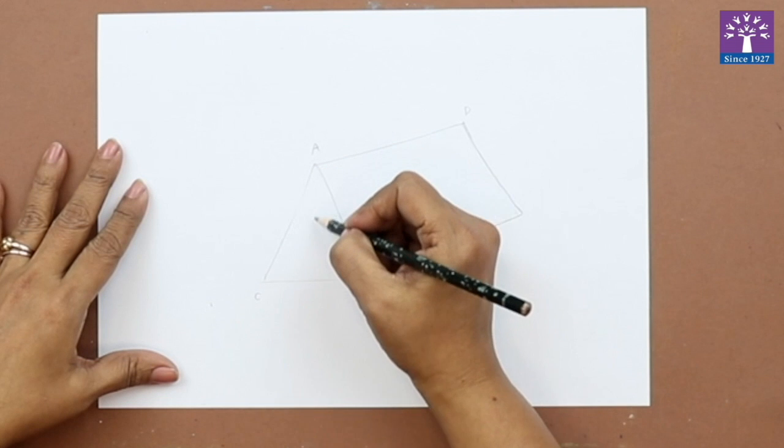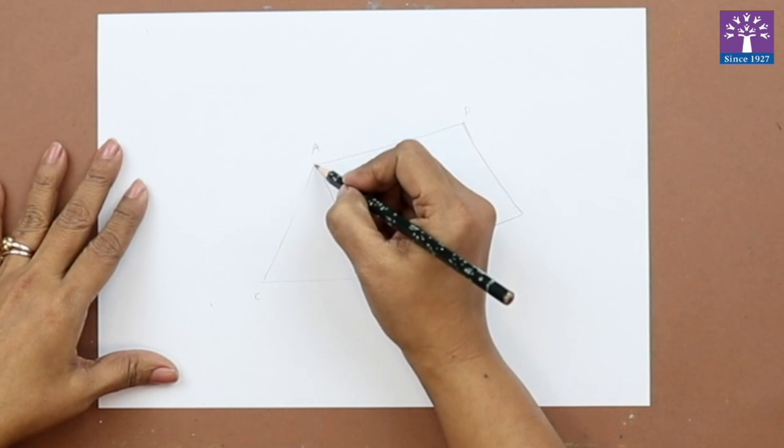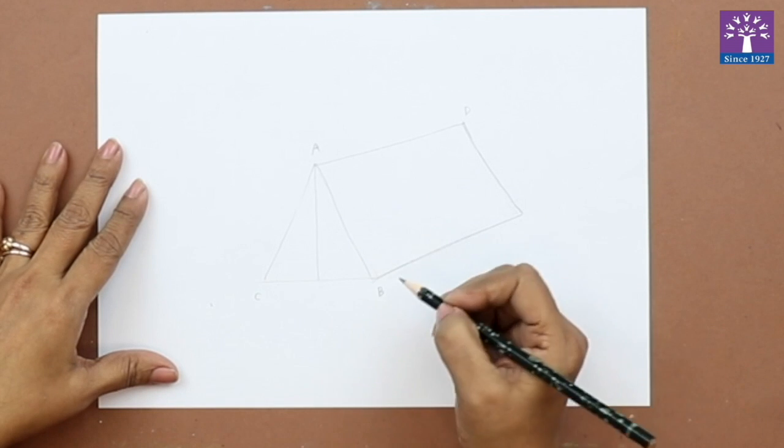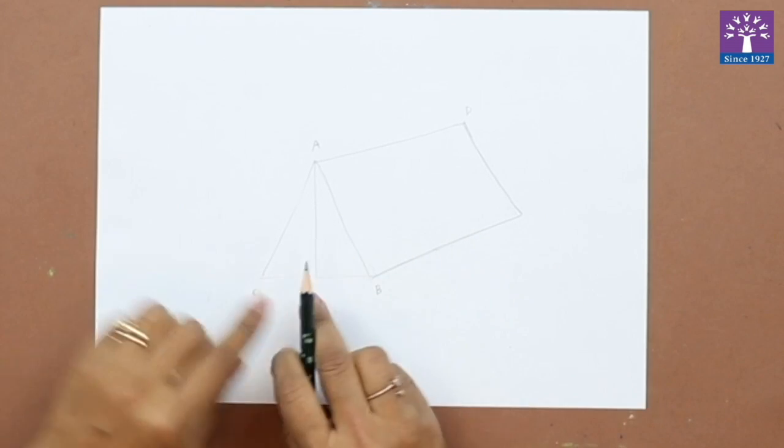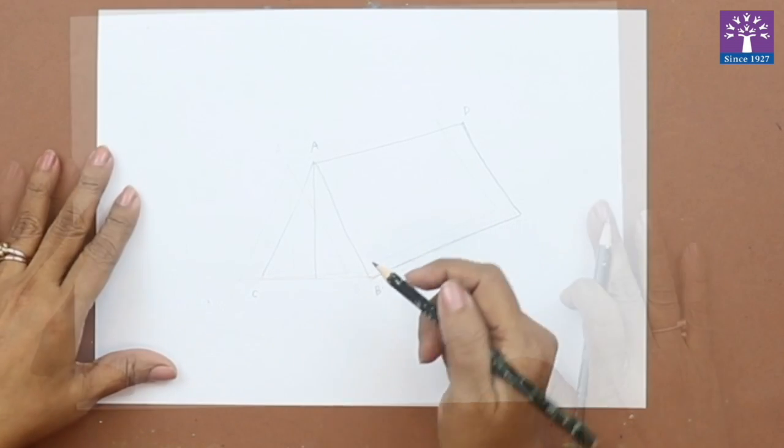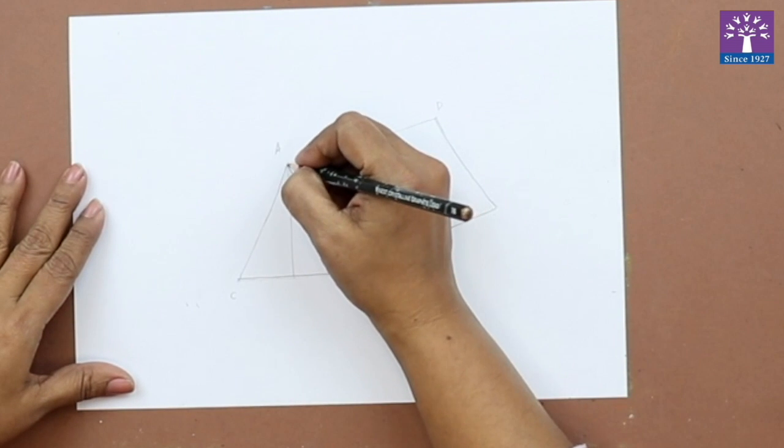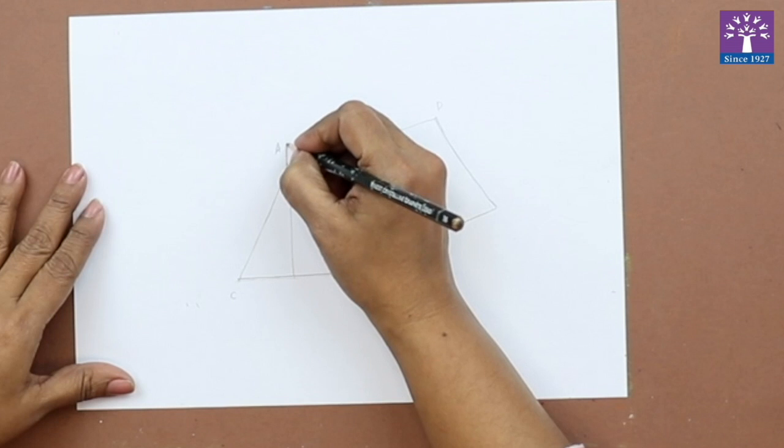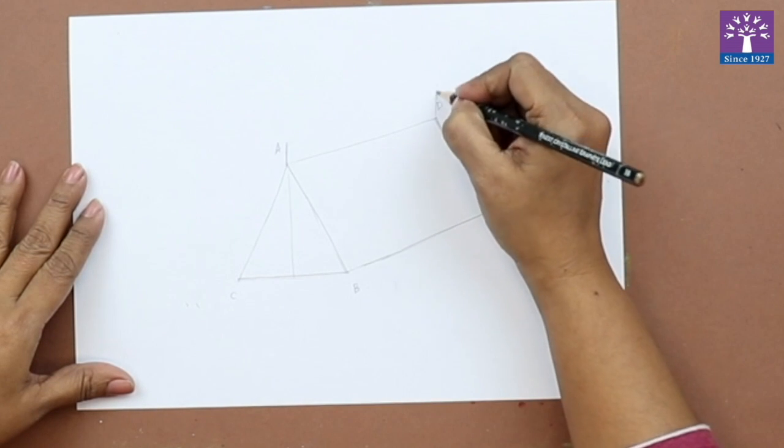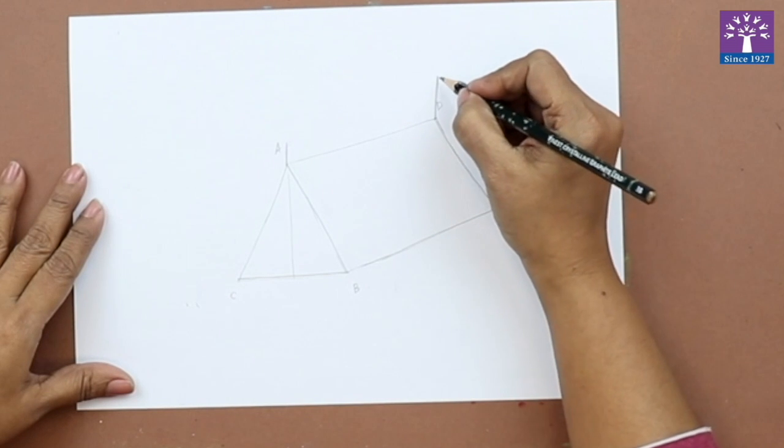This will be the opening of the tent from where you can go inside. Now draw two small lines, one on point A and one on point D.